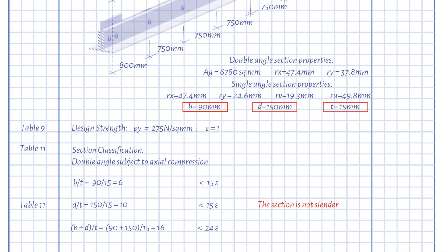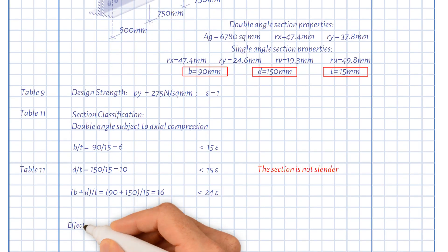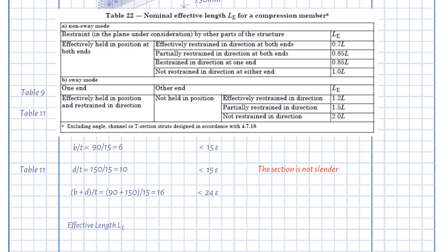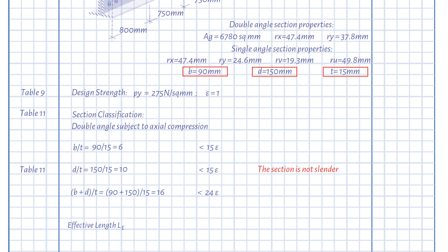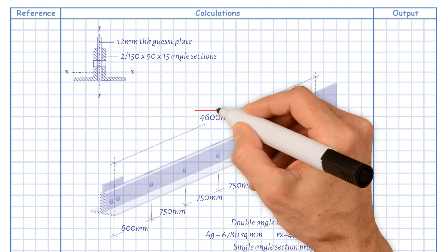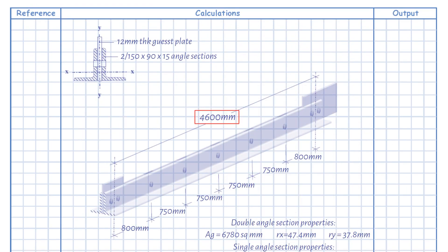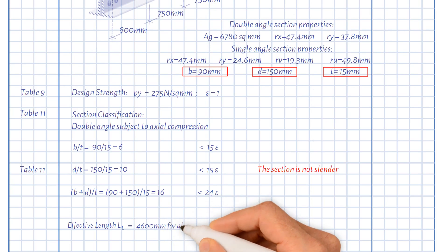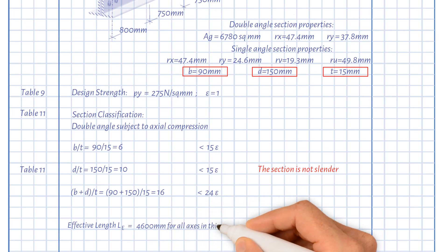Next, we need to determine the effective length. The effective length equals 4,600 millimetres for all axes in this case.